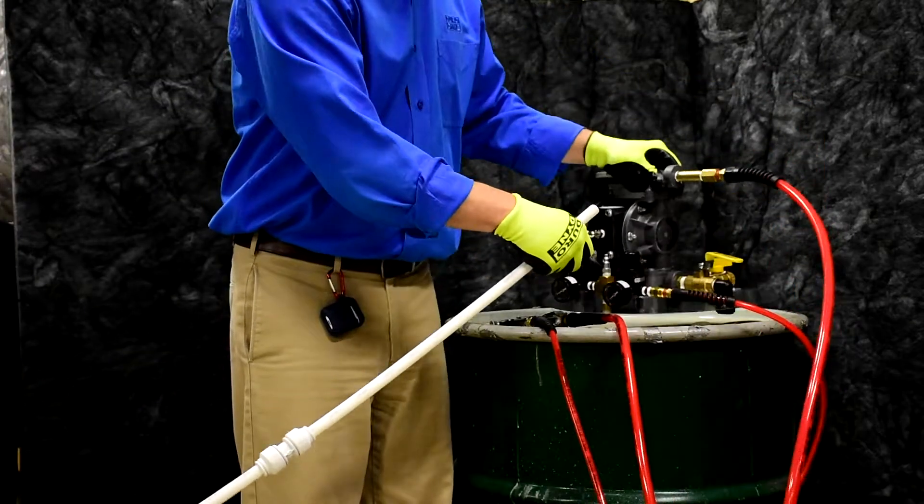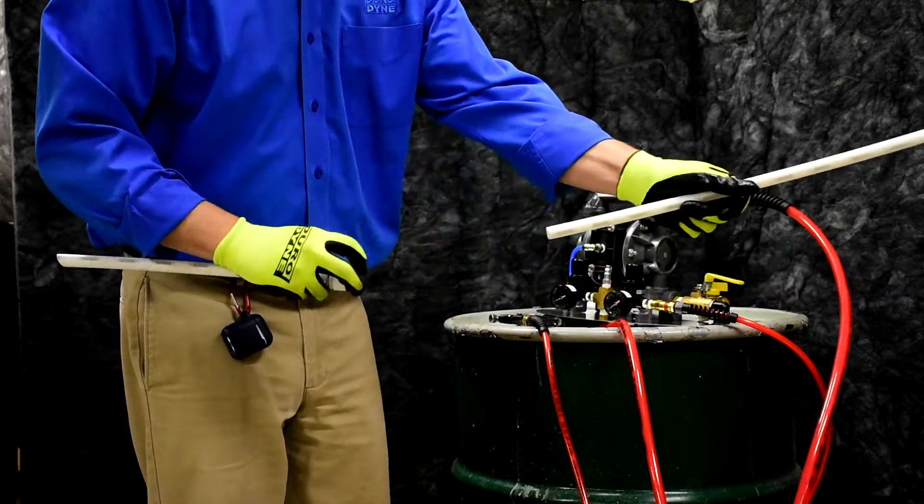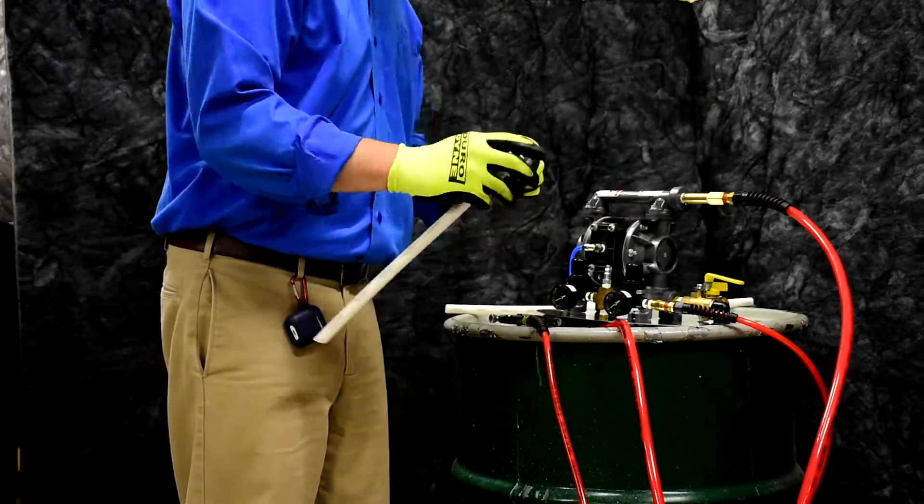To separate the tubes from the coupling, push in gently on the ring on the outer edge of the coupling and pull the tube from the fitting.